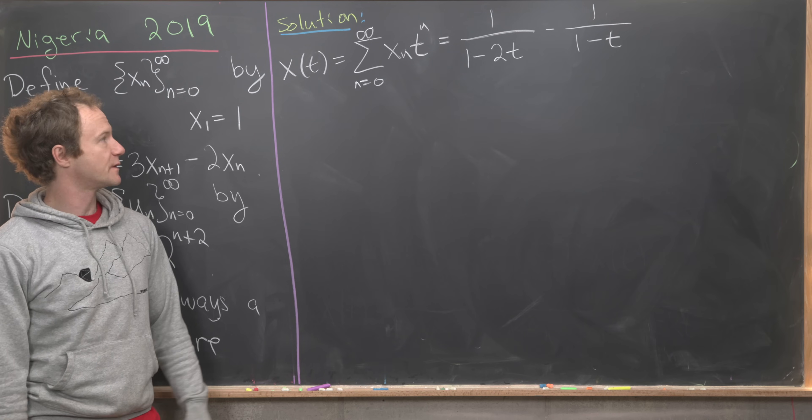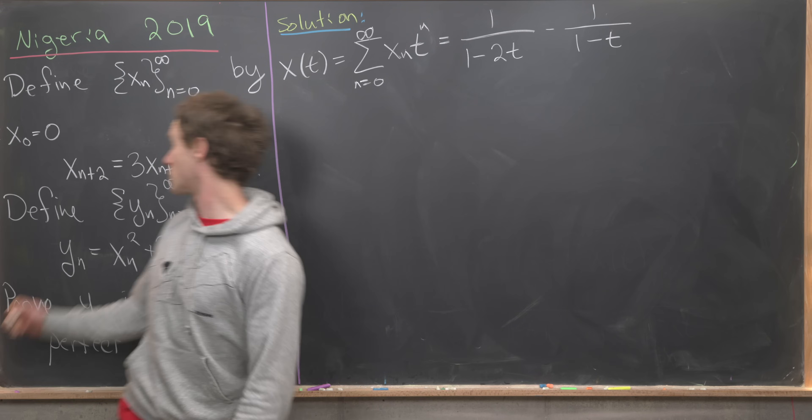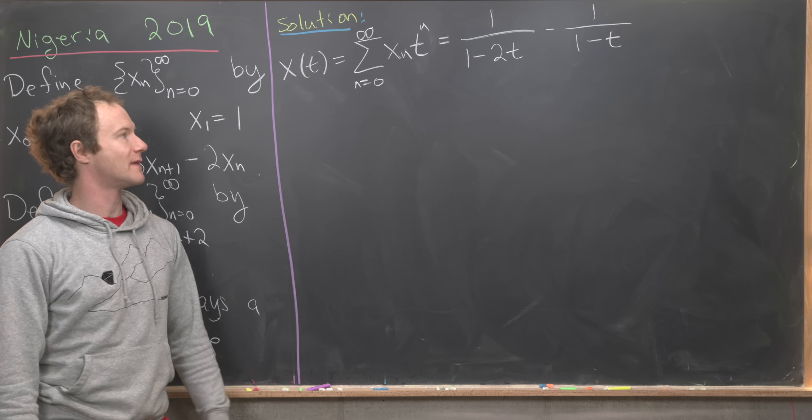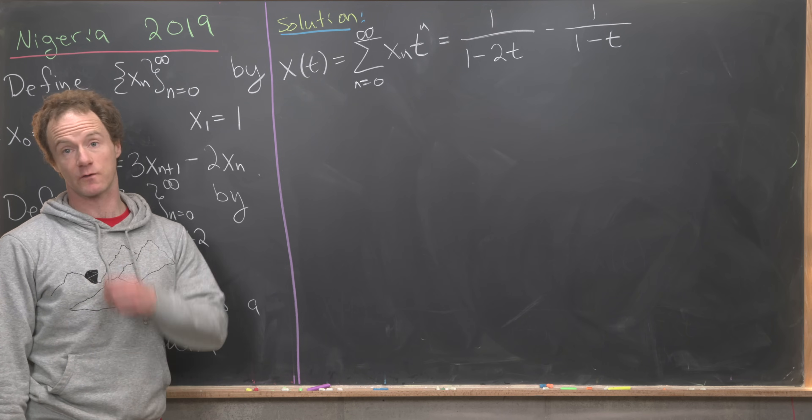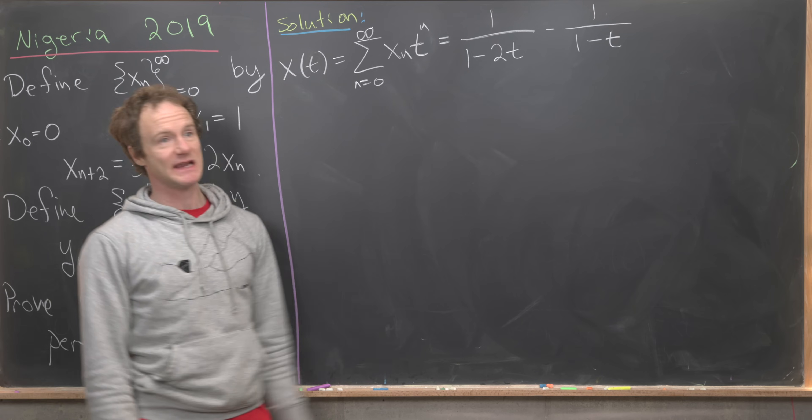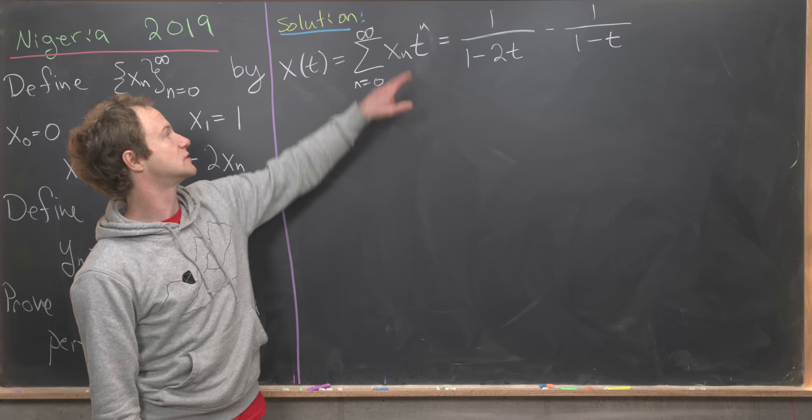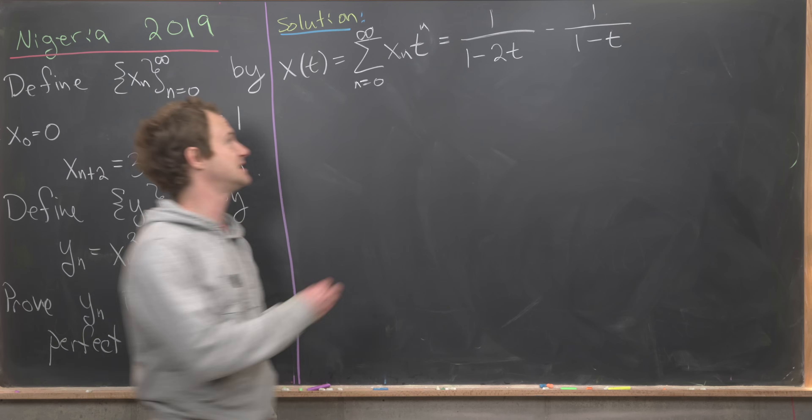We determined that a closed form for our generating function for our x sequence was given by 1 over 1 minus 2t minus 1 over 1 minus t. Now we'll expand each of these as geometric series. That'll give us a closed form for x sub n.